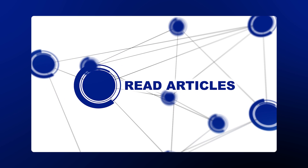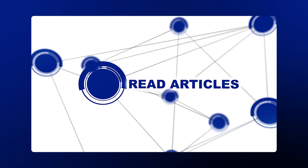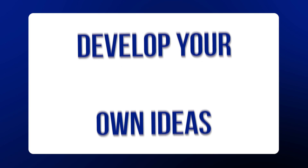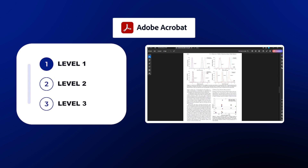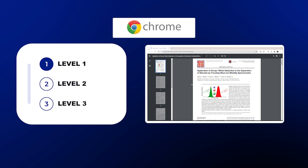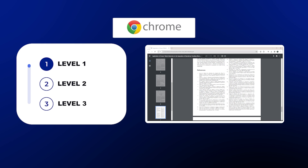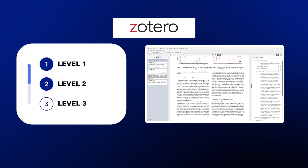Now that you have a way to find and organize articles, you need a PDF reader so that you can actually read the article and understand what it's discussing, so that you can develop your own ideas or check that information is correct. Level one is going to be free PDF viewers — this includes something like Adobe Acrobat or even Google Chrome. Just dragging and dropping the PDF into Google Chrome will allow you to read it. Level two is also free but includes PDF annotations — this could be Adobe Acrobat or Zotero, which allows you to search those annotations after the fact.